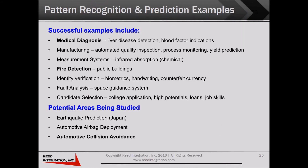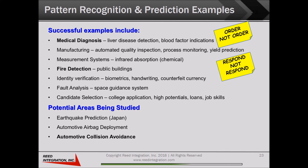Here are some areas where MTS pattern recognition has been very successful. Liver disease detection was one of the earliest — analyzing blood test results to decide whether to order additional tests. Fire detection in hotels: in some countries, guests may be heavy smokers and may cook in rooms with open fires, requiring determination to correctly respond or not respond with firefighters. And automobile collision avoidance, where numerous sensor data will need to be correctly interpreted to decide to take control or not take control away from the driver.